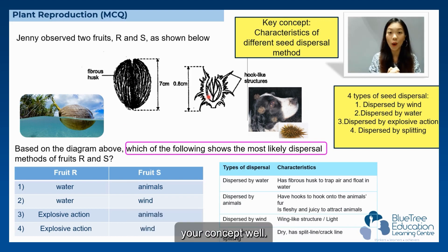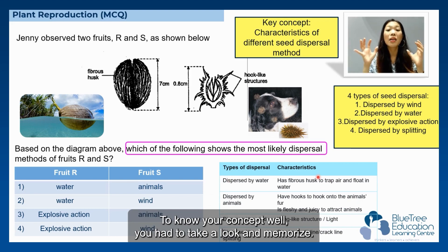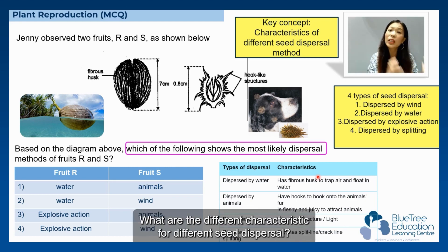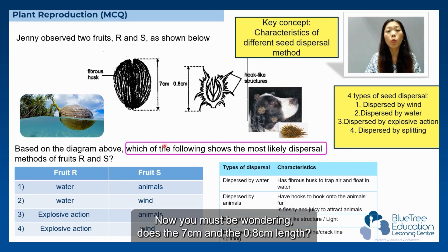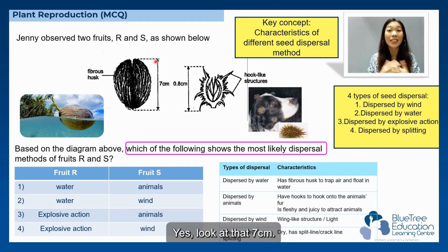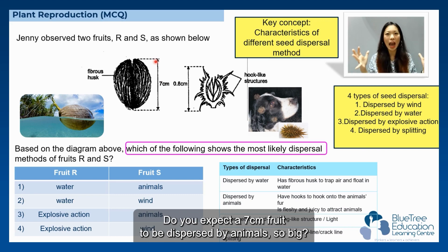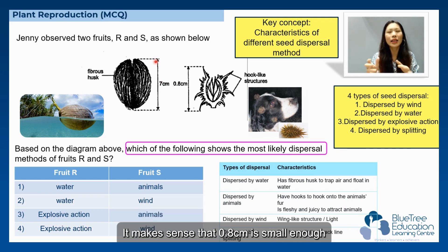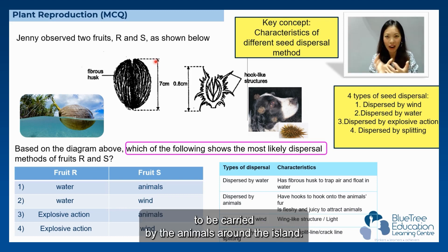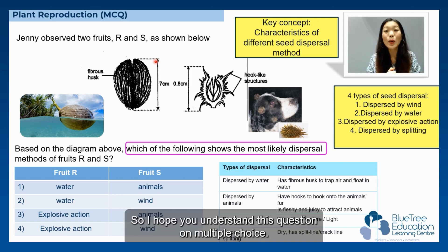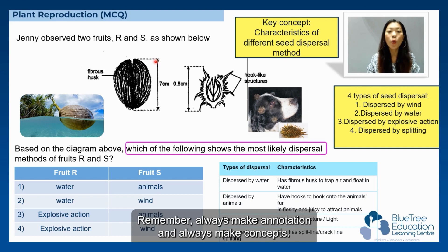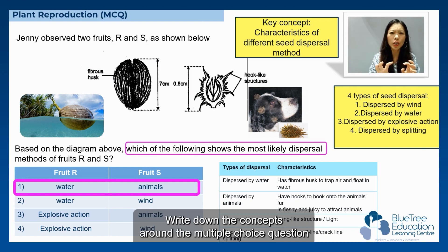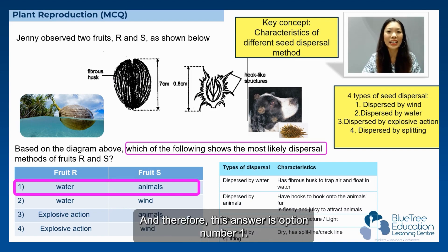To do this question, you need to know your concepts well — familiarize yourself with the characteristics of each seed dispersal type. You must also consider the measurements: a 7cm fruit is too large to be easily dispersed by animals, whereas 0.8cm is small enough to be carried around. Always make annotations and write down the concepts around the multiple choice question so you won't make careless mistakes. Therefore, the answer is option number one.